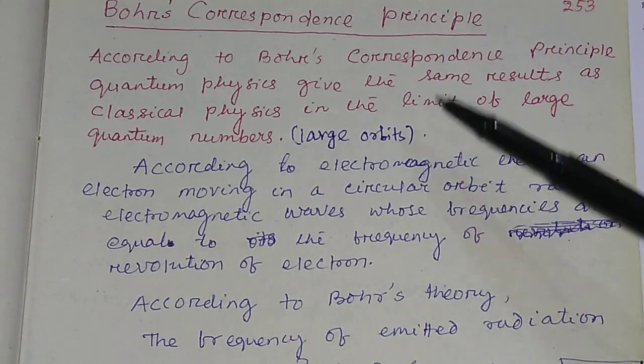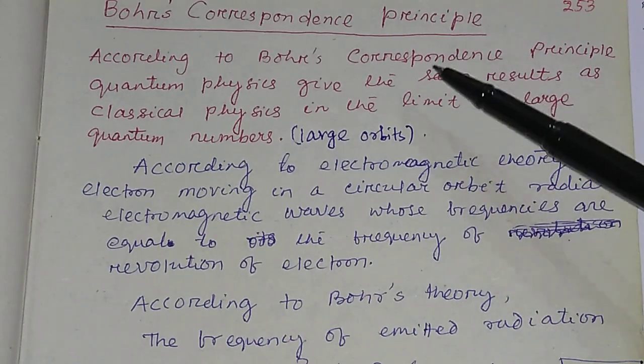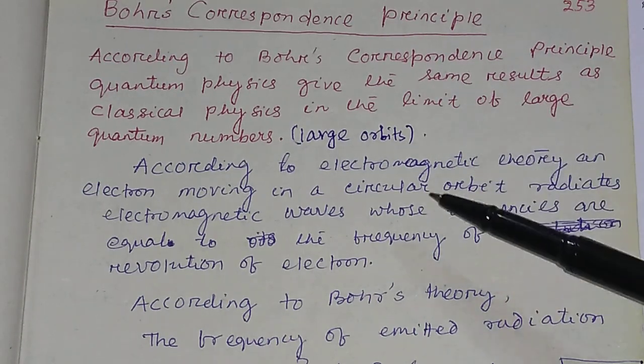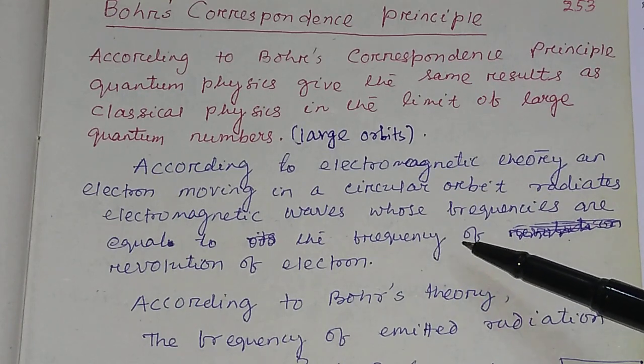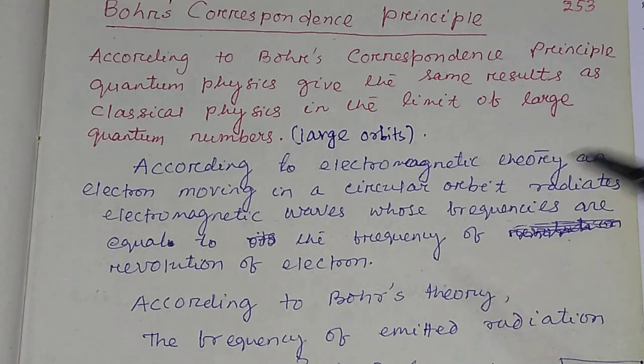According to Bohr's Correspondence Principle, the two frequencies — the orbital frequency and the frequency of emitted radiation — are equal.